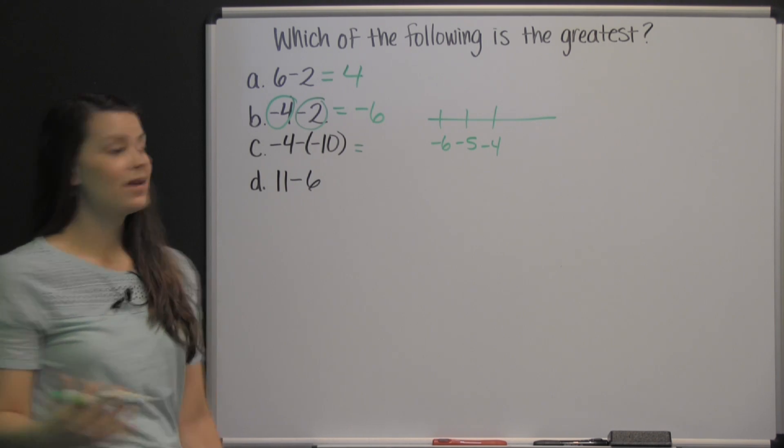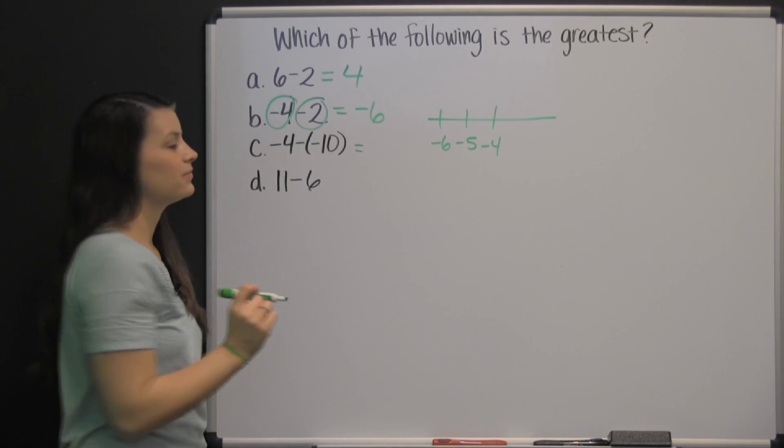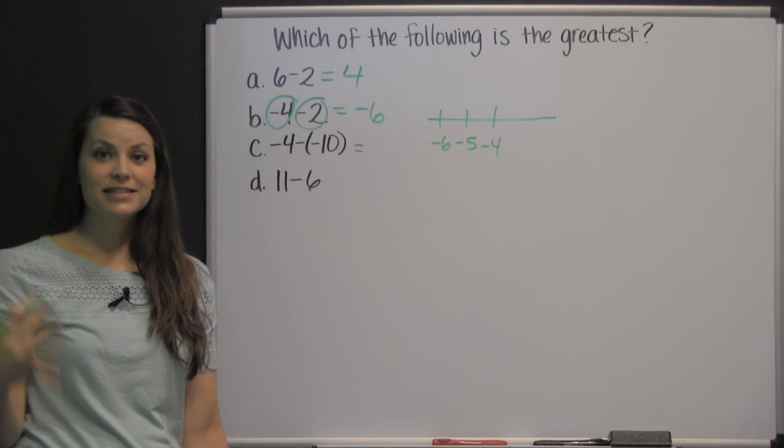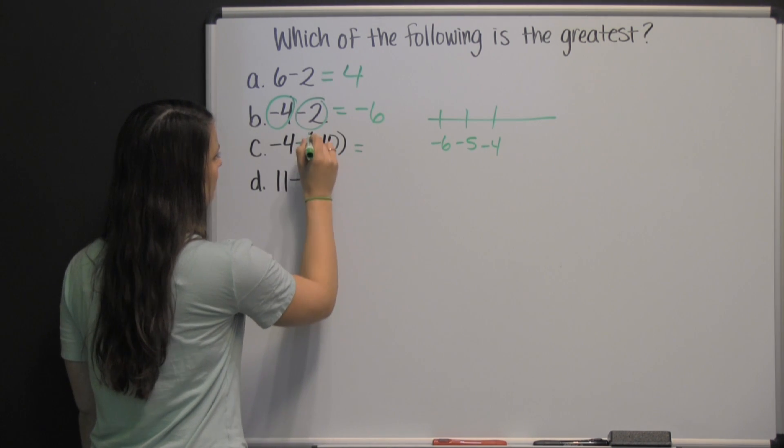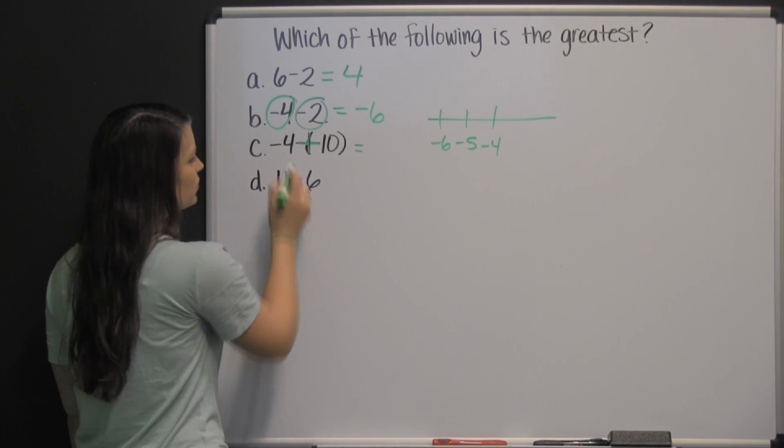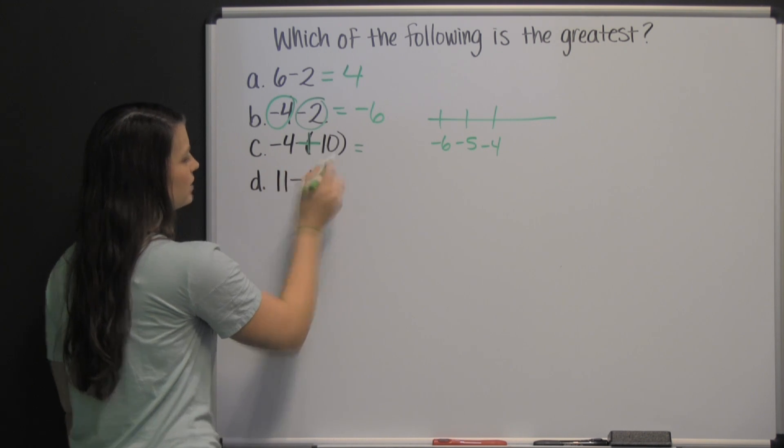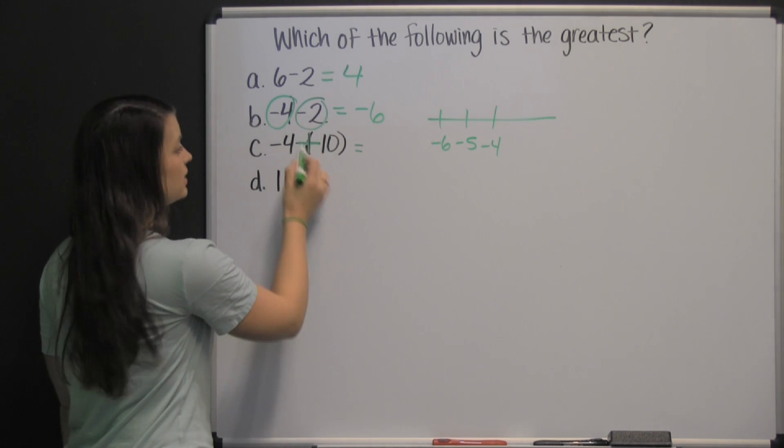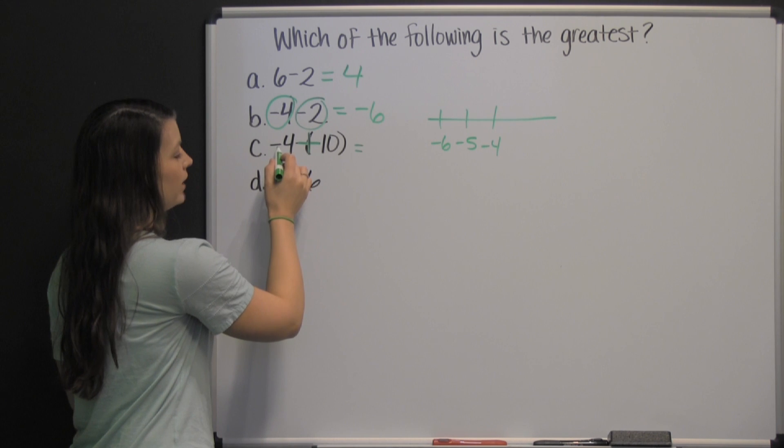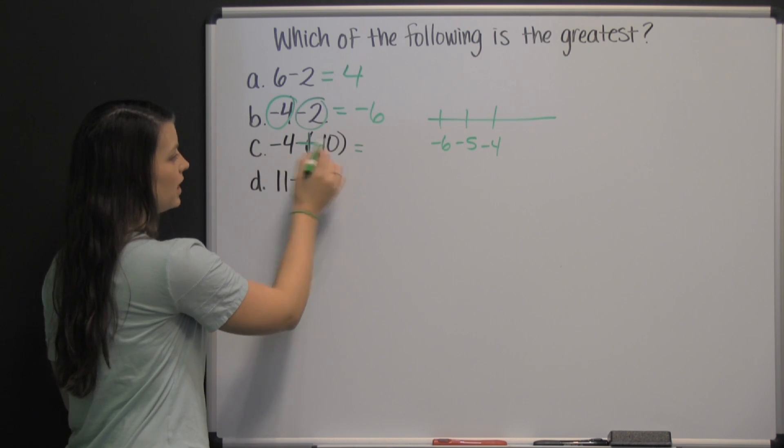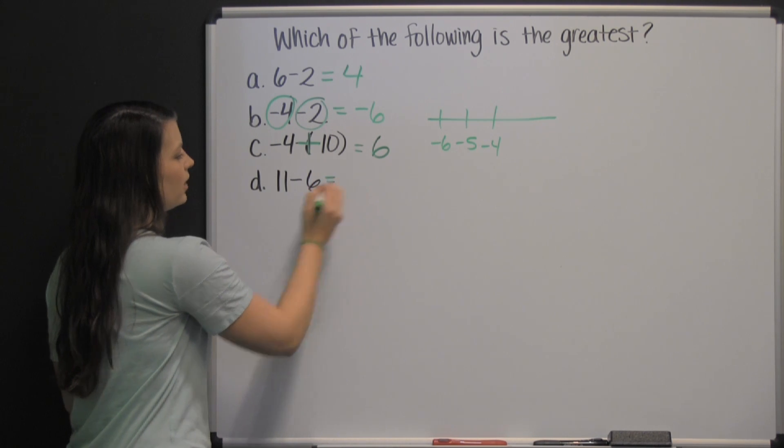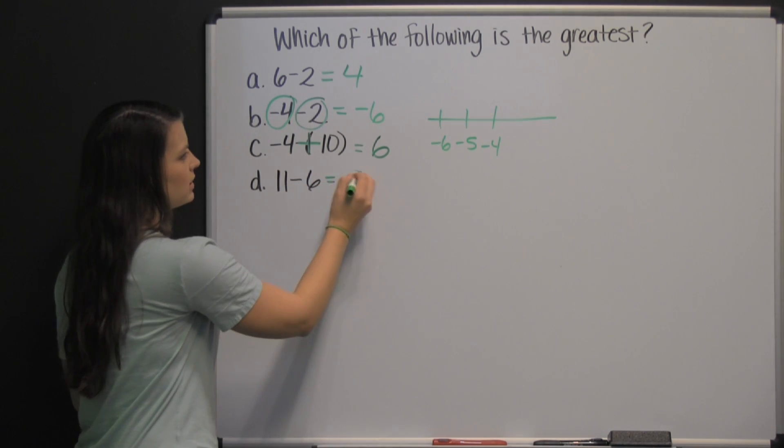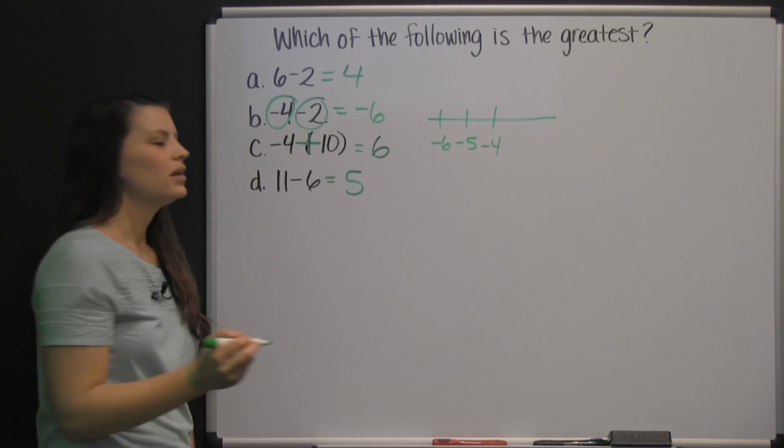Now here's the cool thing about subtracting a negative. It's actually the same as adding a positive. So these two negatives make a plus sign. So it's really just negative four plus ten. Or it's a positive ten minus four. Positive ten minus four is positive six. Finally, eleven minus six is five.